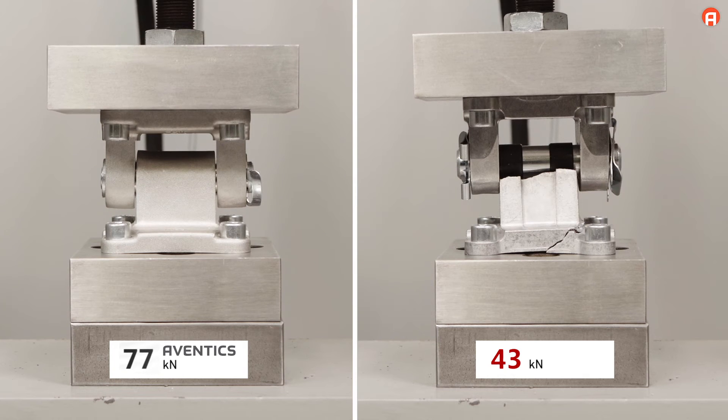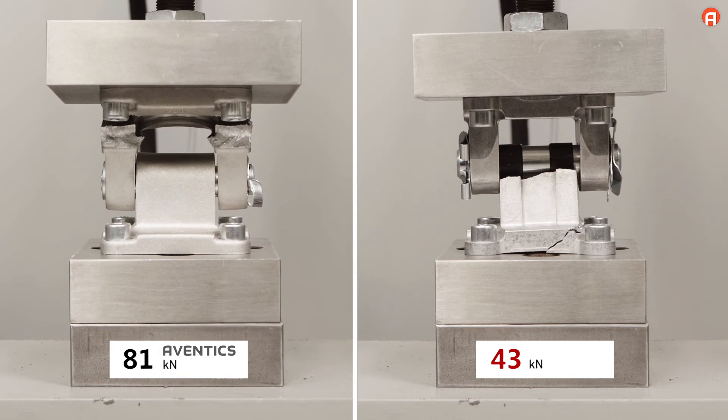The forged aluminum mounting only breaks at 81 kN. This means it can withstand nearly twice the load.